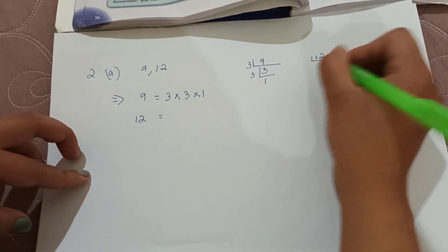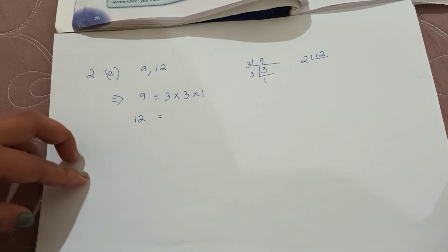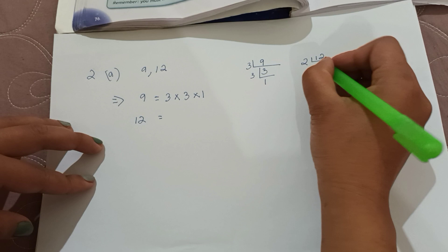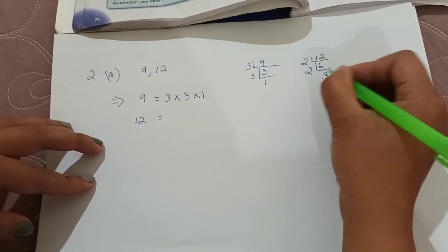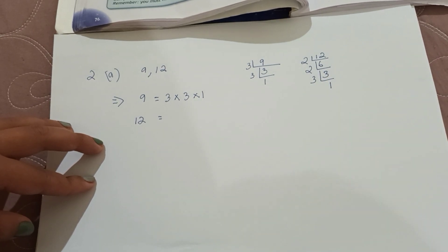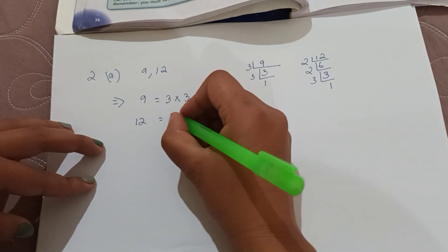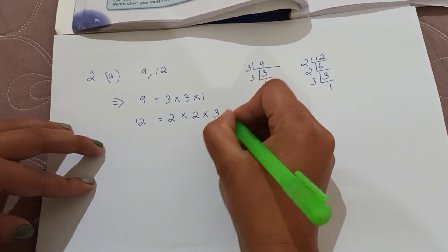Number 12. We can divide by 2. 2, 6 times 12. 2, 3 times 6. 3, 1 times 3. So we get 2 into 2 into 3 into 1.